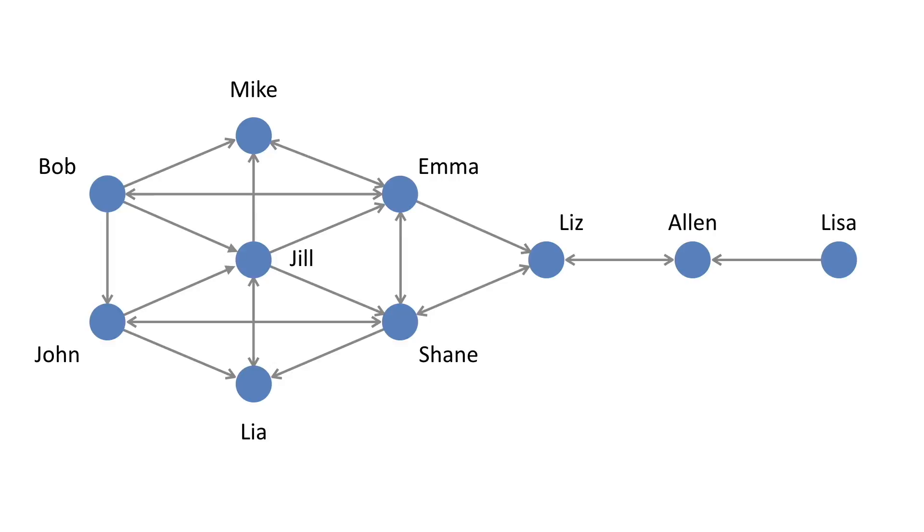But like degree centrality, closeness centrality can also be — if you know the direction of the ties — broken down into closeness in terms of incoming ties to you, or closeness in terms of outgoing ties from you. In this case, we're calculating the global closeness centrality measure, and we find that Emma and Shane are both important players in this network.